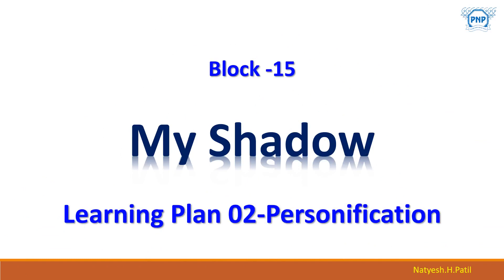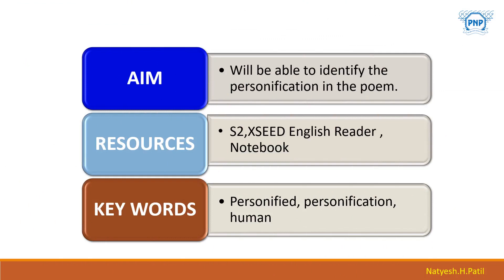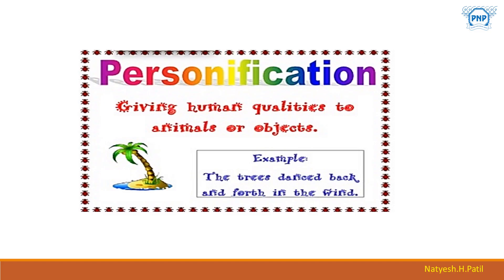We have already seen a poem 'My Shadow,' and today we are taking personification — Learning Plan number 2. Once you go through this session, you will be able to identify the personification in the poem. The resources required are the Std. 6 English Reader and notebook. Keywords for this session are: personification and human.